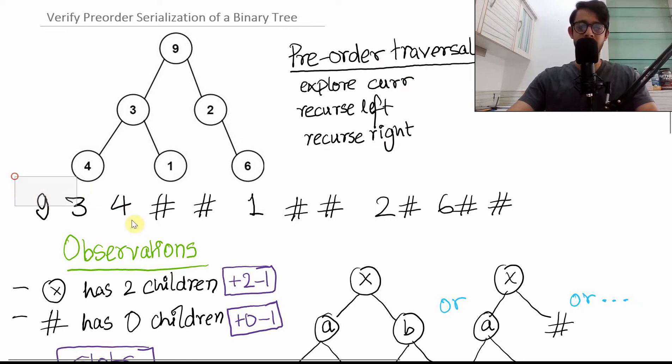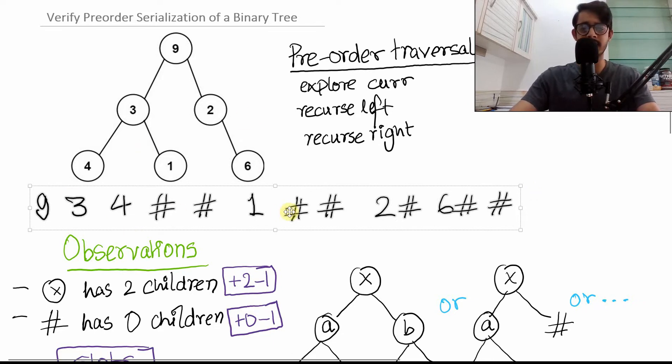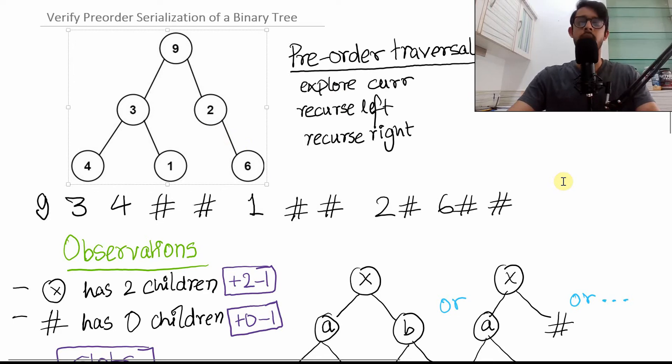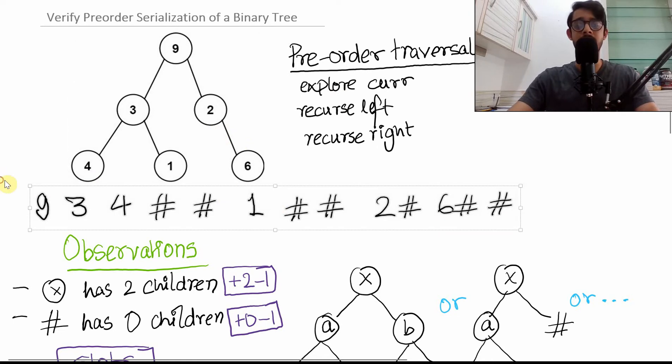You are given a string like this, which is supposedly a preorder traversal of another tree. In this case, this string represents a tree like this. The goal is to find if this given string is a valid string or not.